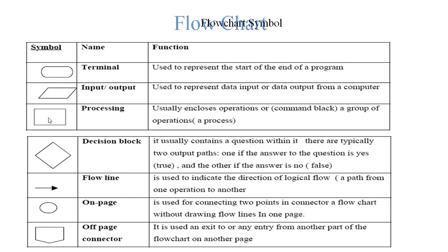A decision block usually contains a question. Within it, there are typically two output paths: one if the answer to the question is yes or true, and the other if the answer is no or false. You can use the decision symbol for this.